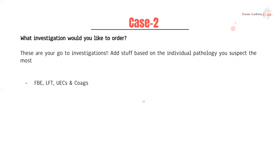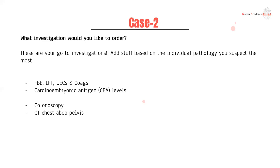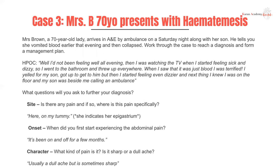What investigations would you like to order? Go-to investigations: FBE, LFT, UEC, coags. We do a CEA because we suspect colorectal cancer. A colonoscopy is going to be our gold standard imaging choice. We can also do a CT chest/abdomen/pelvis to look for a mass and for any metastatic spread. And finally, also a PET scan. That patient had colorectal cancer, just to be clear.